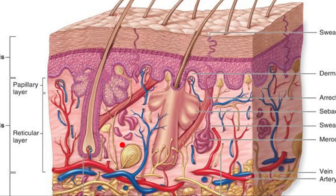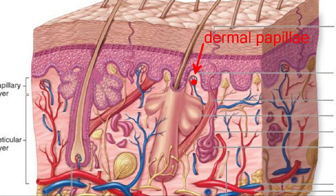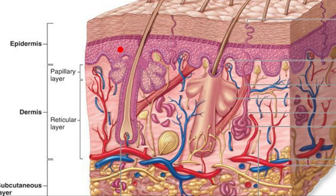This is the dermis. These are dermal papillae, and in between the dermal papillae there are epidermal ridges. So these are protrusions between the dermal papillae and the dermis.